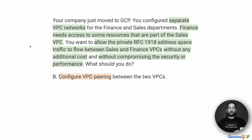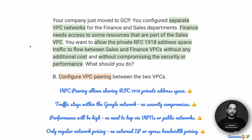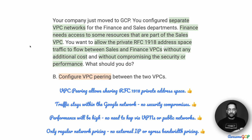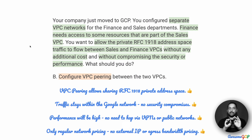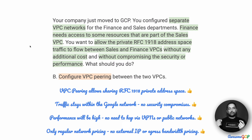Option B suggests that we configure VPC peering between the two VPCs. What does VPC peering give us? First, it does allow the sharing of the RFC 1918 address space, so both networks can share the same address space which is private within RFC 1918. Since this is a connection that does not traverse the external internet and stays entirely within the Google network, there are no security compromises, and that suits us very well. Because the traffic does not have to traverse the public internet or hit an external gateway, we can expect the performance to be higher.